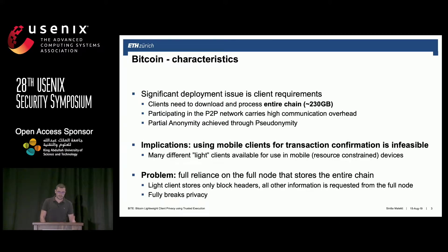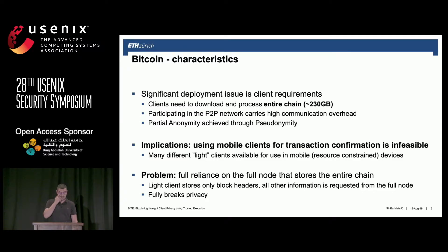However, the problem with that is that light clients have full reliance on the full node that stores the entire chain. In essence, if you need a full node to process your requests, you lose the privacy — even the pseudonymity that Bitcoin offers you.